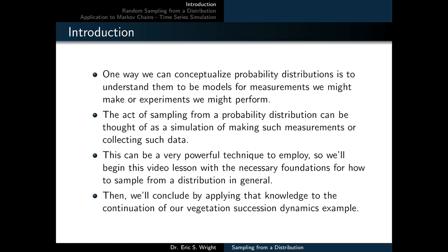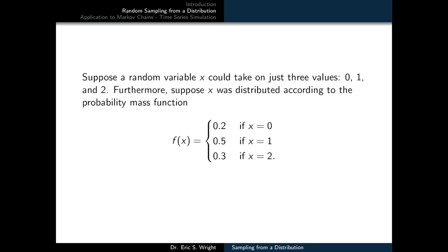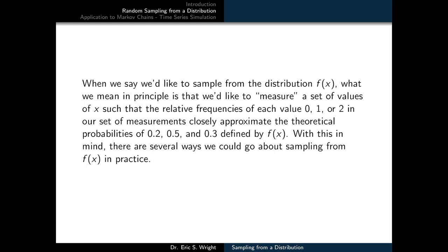Then we'll conclude by applying that knowledge to the continuation of our vegetation succession dynamics example. Suppose a random variable x could take on just three values, 0, 1, and 2. Furthermore, suppose x was distributed according to the probability mass function f of x equals 0.2 if x is 0, 0.5 if x is 1, and 0.3 if x is 2. When we say we'd like to sample from the distribution f of x, what we mean in principle is that we'd like to measure a set of values of x such that the relative frequencies of each value 0, 1, or 2 in our set of measurements closely approximate the theoretical probabilities of 0.2, 0.5, and 0.3 defined by f of x.